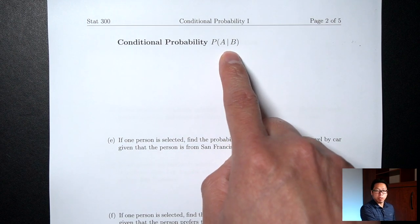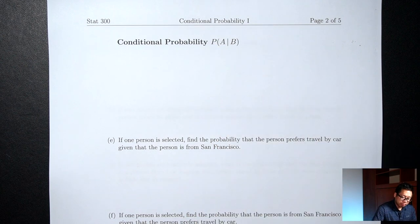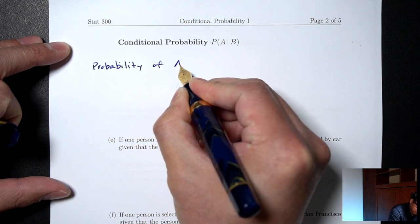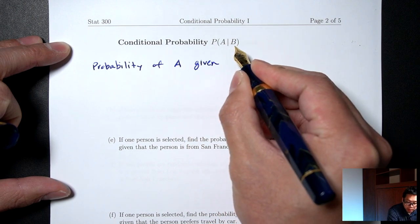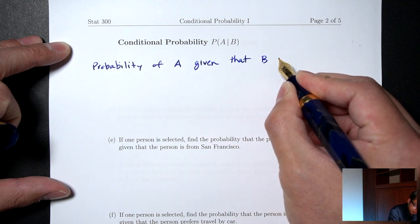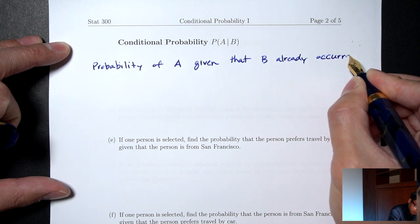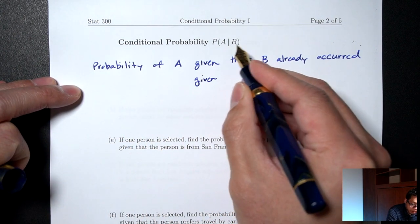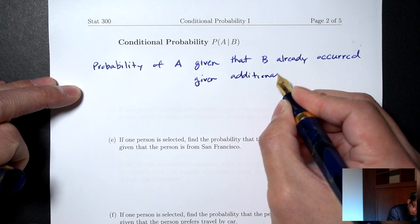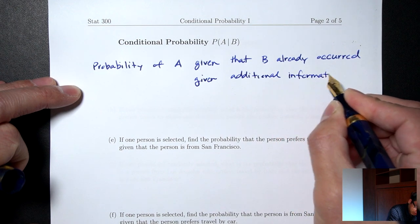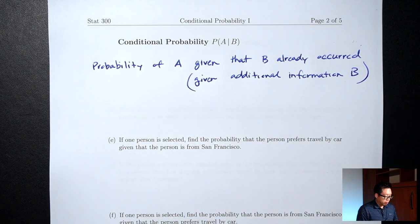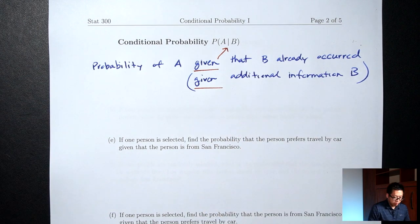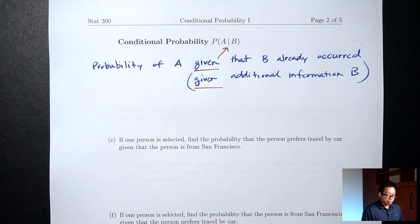Conditional probability. The symbol for conditional probability is P(A | B), and the way you read that is: probability of A given that B already occurred. Another way to think about this is probability of A given B. So anytime you see the word 'given' in a question, it's asking for conditional probability.